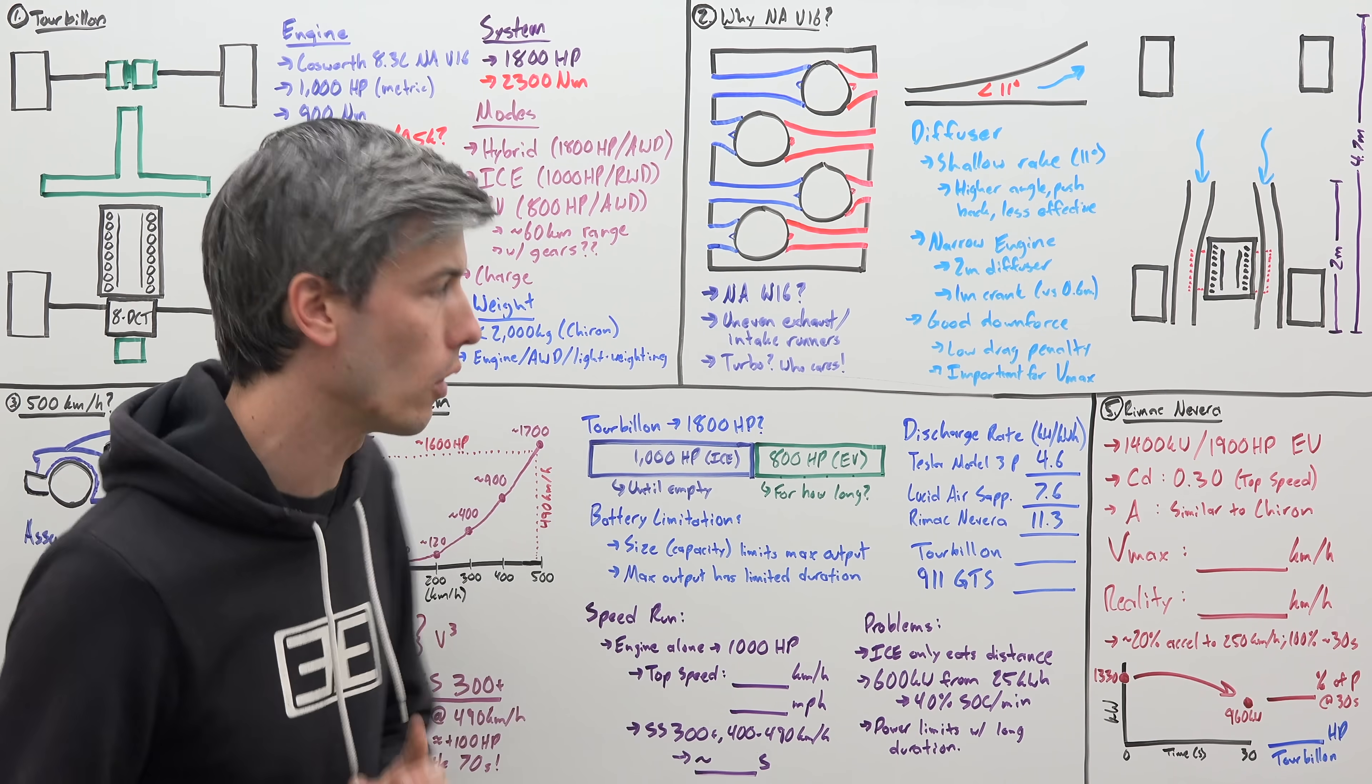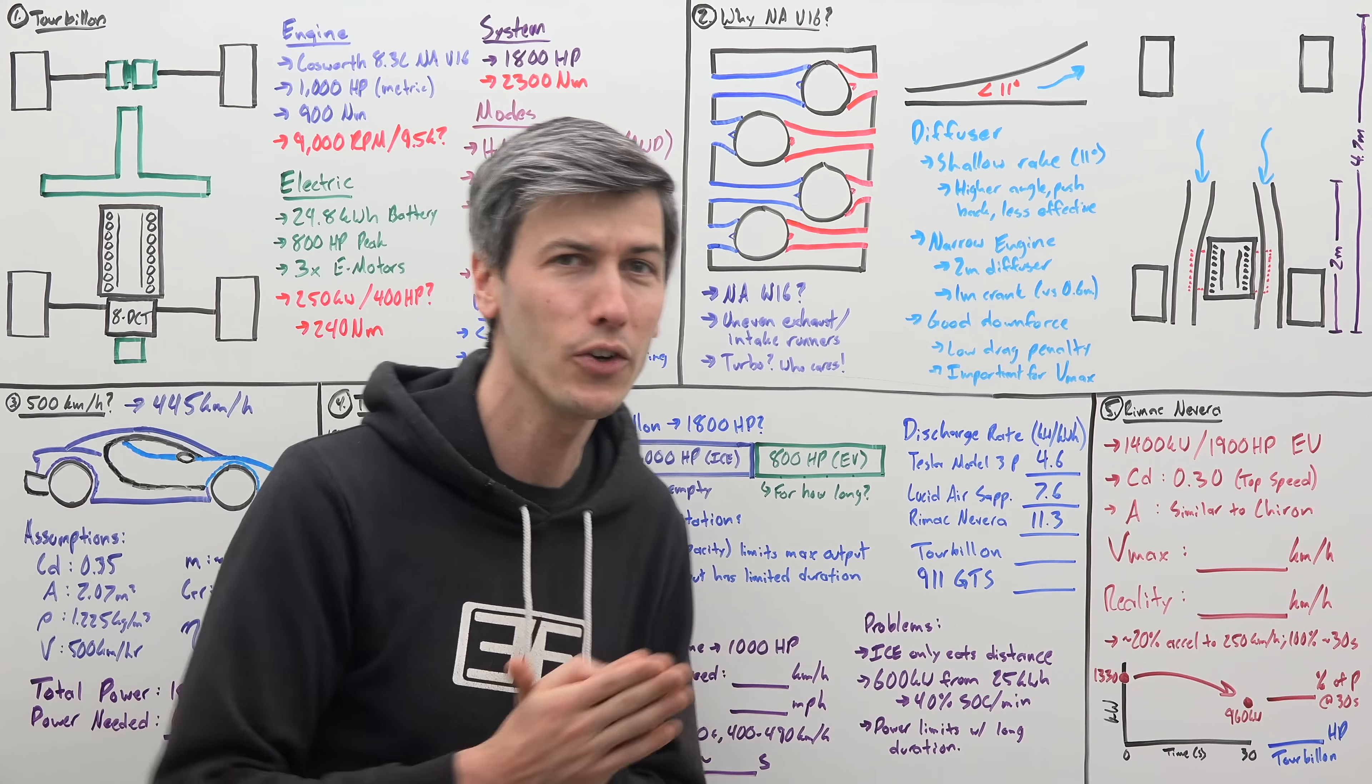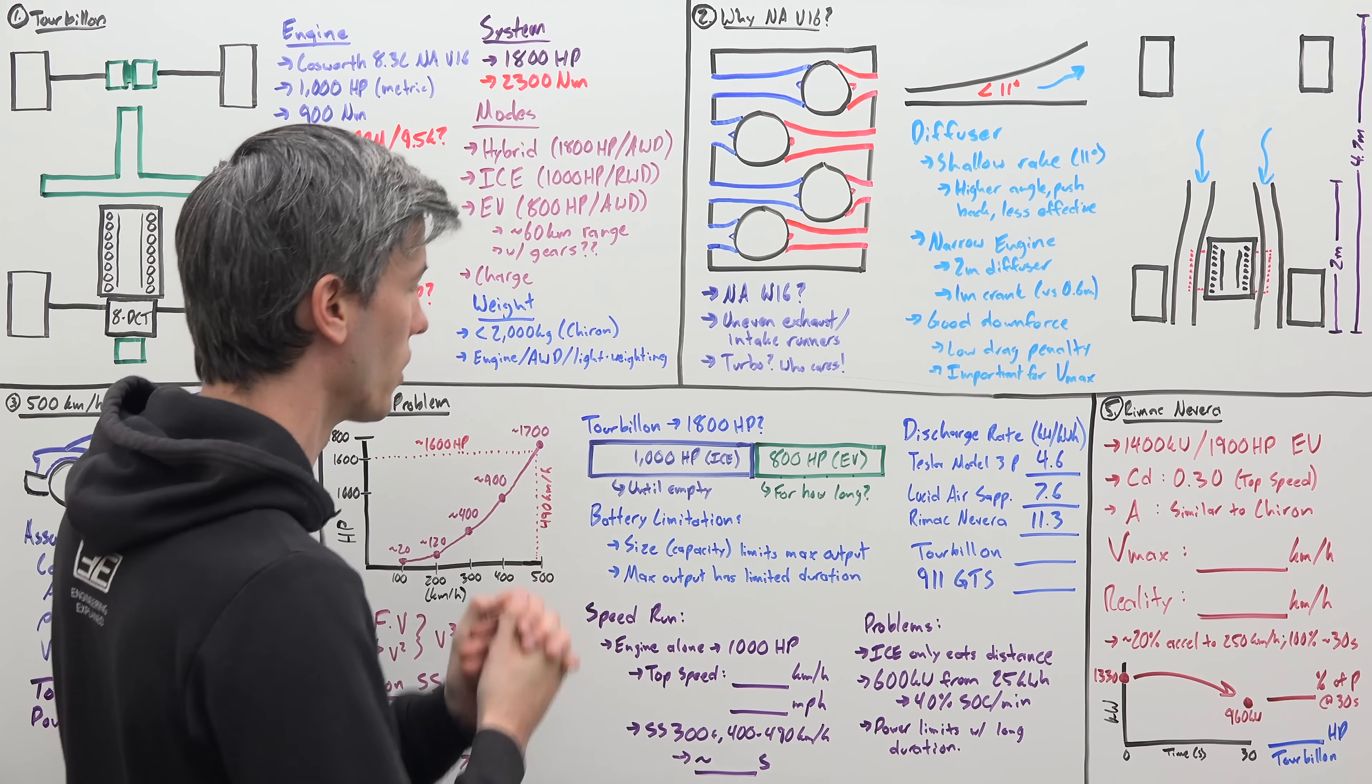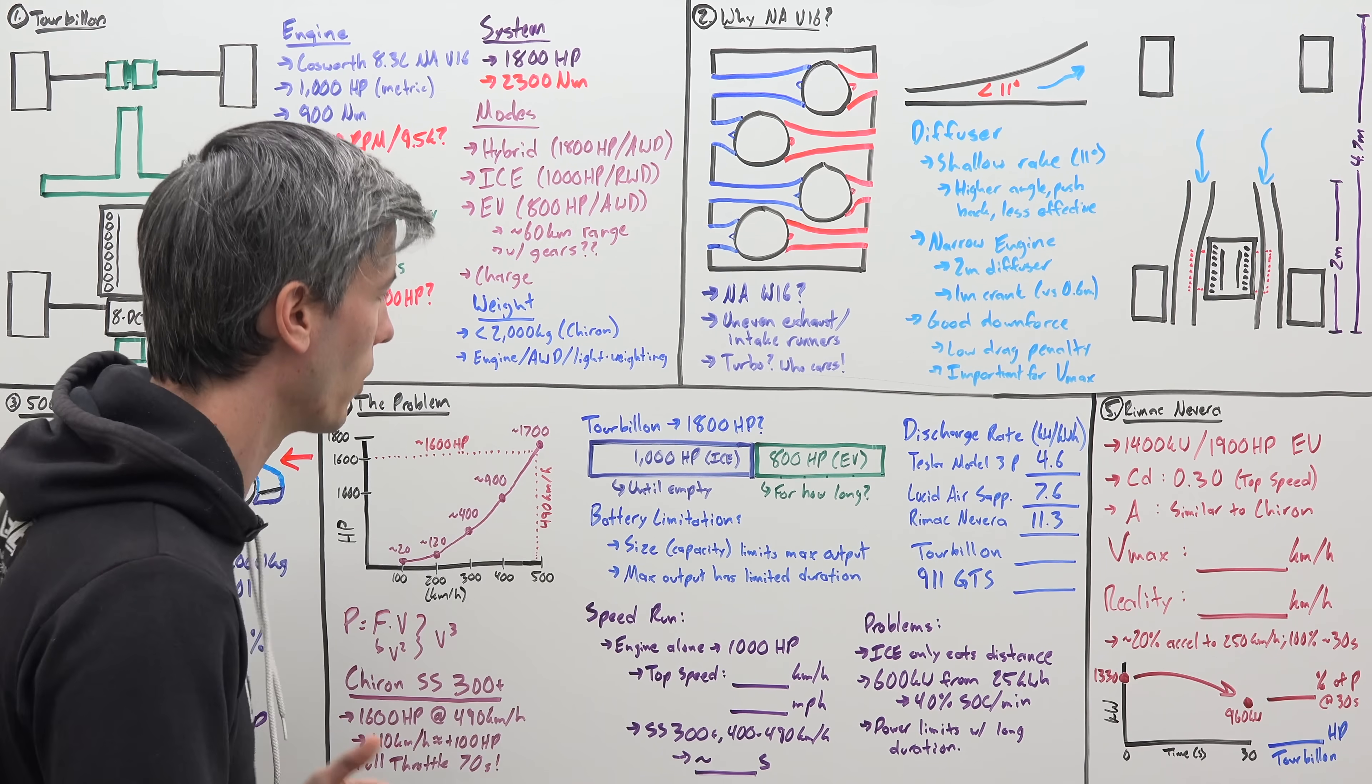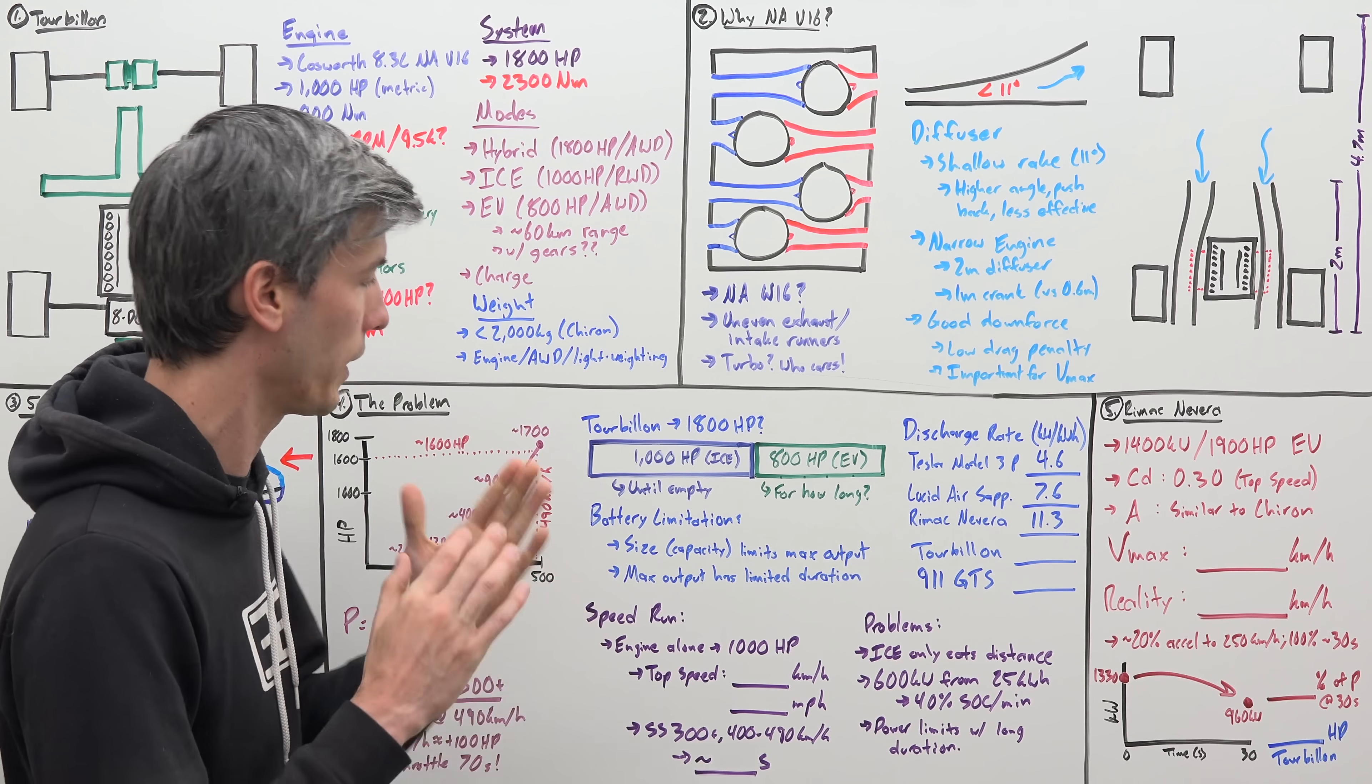So the Tourbillon has 1,800 horsepower. But the question is, for how long? Because this 1,800 is comprised of 1,000 horsepower from the combustion engine versus 800 horsepower from the electric powertrain. So how long does this 800 horsepower last? Now, why do I ask this question? Well, a combustion engine will deliver its full power until it runs out of fuel. They're very happy to do that as long as you keep them at the right temperature. Battery limitations, however, exist.